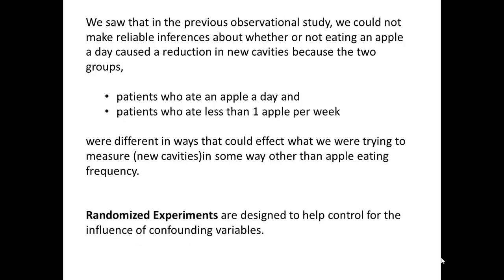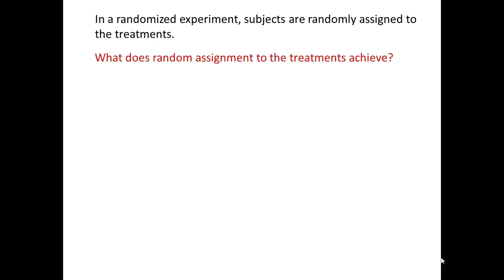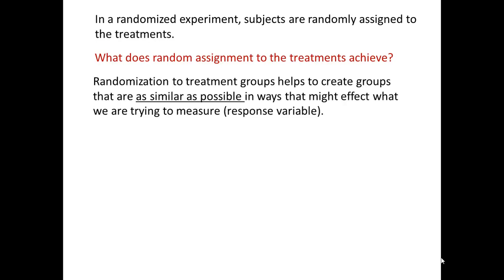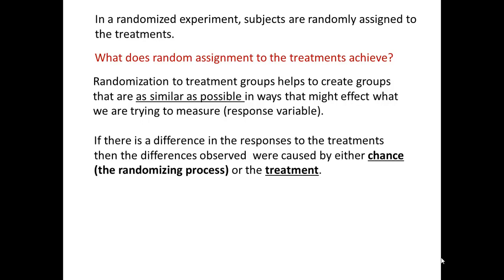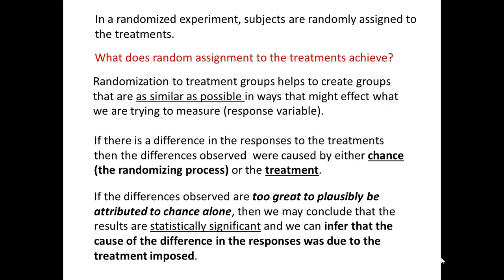A randomized experiment will come to the rescue. Randomized experiments are designed to help control for the influence of confounding variables. In a randomized experiment, subjects are randomly assigned to the treatments. Randomization helps create groups that are as similar as possible in ways that might affect the response variable, so groups should be as similar as possible before any treatment is imposed. If the differences observed are too great to be plausibly attributed to chance alone, we may conclude the results are statistically significant, and infer that the cause of the difference in responses was due to the treatment imposed.